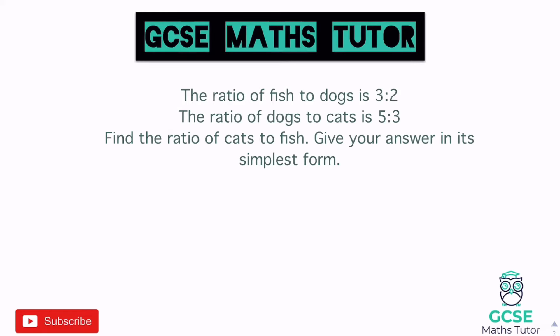Let's have a look at another question with slightly different wording. This question says: the ratio of fish to dogs is 3 to 2 and the ratio of dogs to cats is 5 to 3. Find the ratio of cats to fish. Cats to fish — we can't find that straight away because fish is in the first ratio and cats is in the second, so until we've combined everything we can't compare those two. We need to make a three-part ratio. The crossover is dogs — represented by two in the first ratio and five in the second.